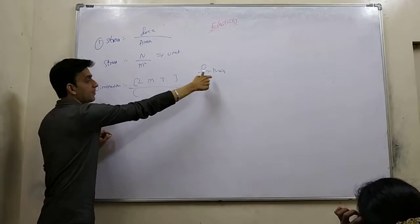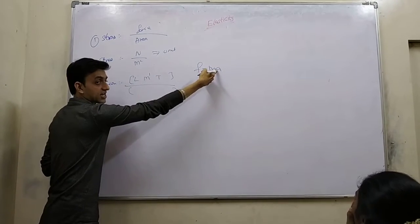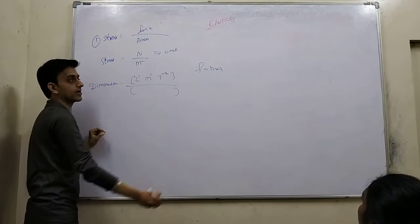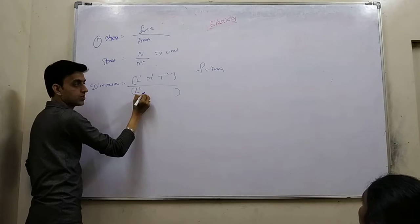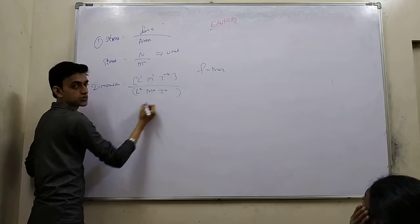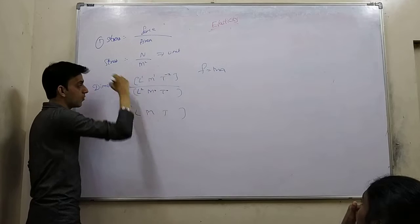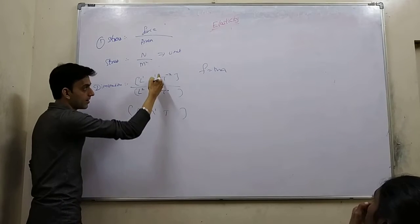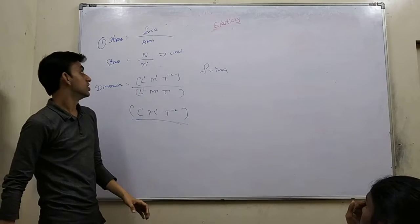Newton is mass times acceleration. Acceleration is meter per second square. Meter square means L². So the dimension is M¹L⁻¹T⁻².